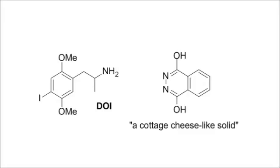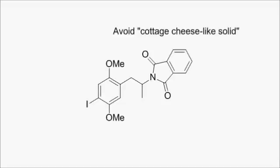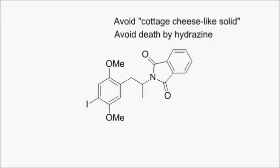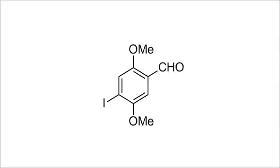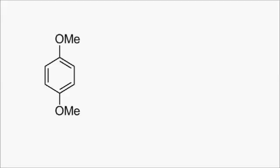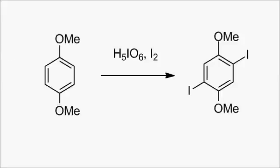But difficulties aside, that completes the synthesis of DOI. If you wanted to avoid the phthalimide protection and deprotection, maybe you could introduce the iodine earlier. Shulgin probably didn't do this because he wanted to work from 2,5-DMA as a common precursor, but this iodoaldehyde is accessible from cheap starting materials. 1,4-dimethoxybenzene can be doubly iodinated using a mixture of iodine and periodic acid in methanol.